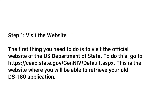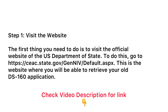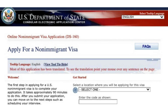Step 1. The first thing you need to do is to visit the official website of the U.S. Department of State. To do this, go to https://ceac.state.gov/gennivisa/Default.aspx. This is the website where you will be able to retrieve your old DS-160 application.